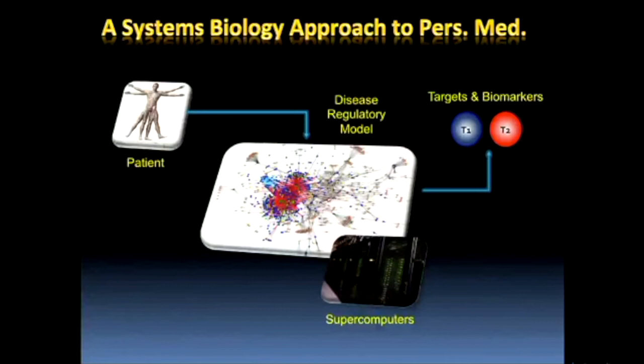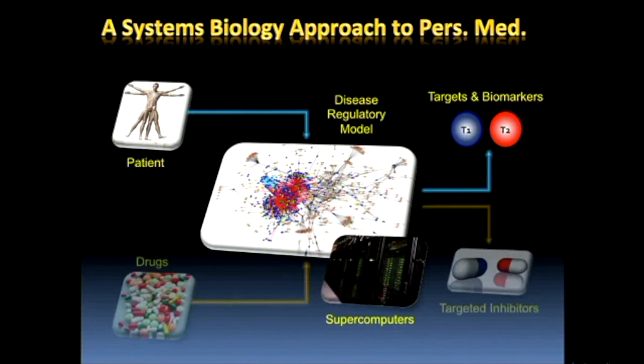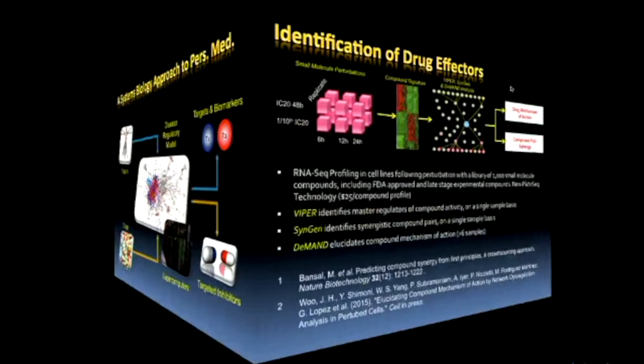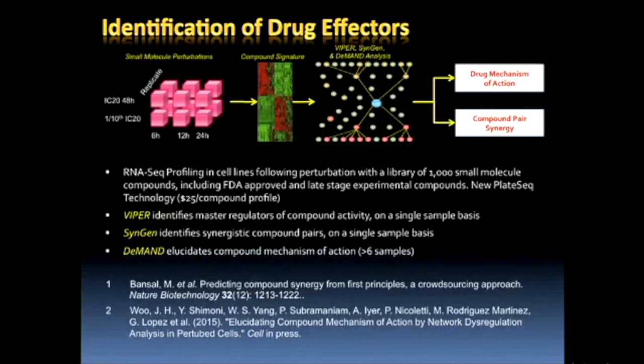Now I'll spend a little time on how we can find the actual drugs. The idea is that we take drug signatures, run them through the same exact regulatory model, and figure out which target inhibitors will abrogate the dependencies of these tumors. We take a large repertoire of FDA-approved and experimental compounds — typically about 2,000 — and because we can now do RNA-seq for $12, we can do multi-time points (6, 12, and 24 hours), multiple concentrations at sub-lethal IC20 levels, and replicates. This gives us a very precise way to infer mechanism of action of drugs — the entire repertoire of proteins either inactivated or activated by each drug.